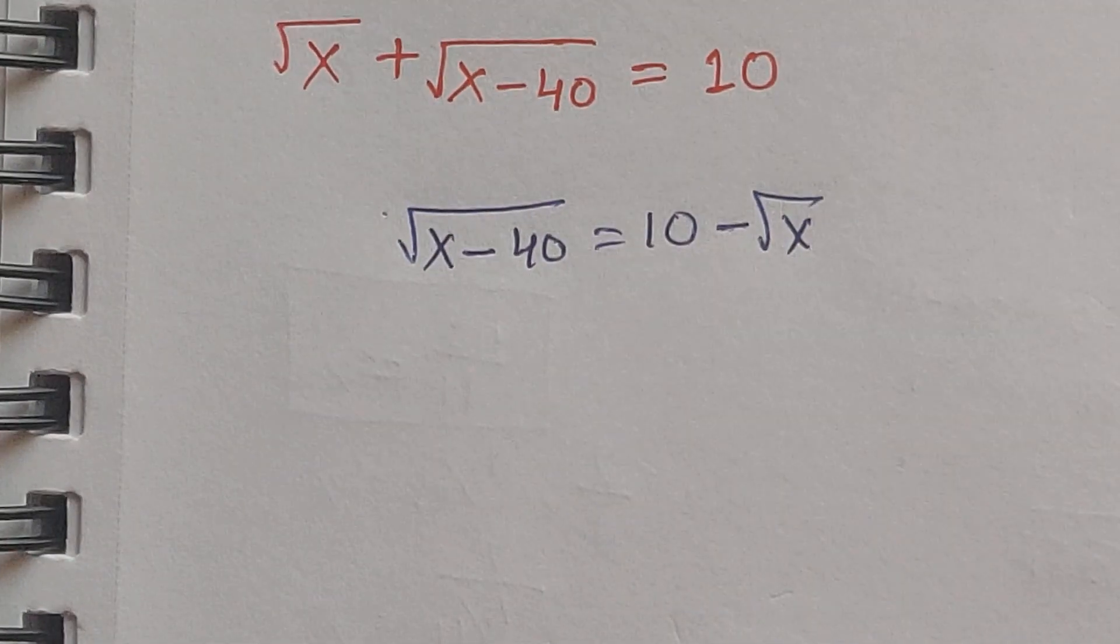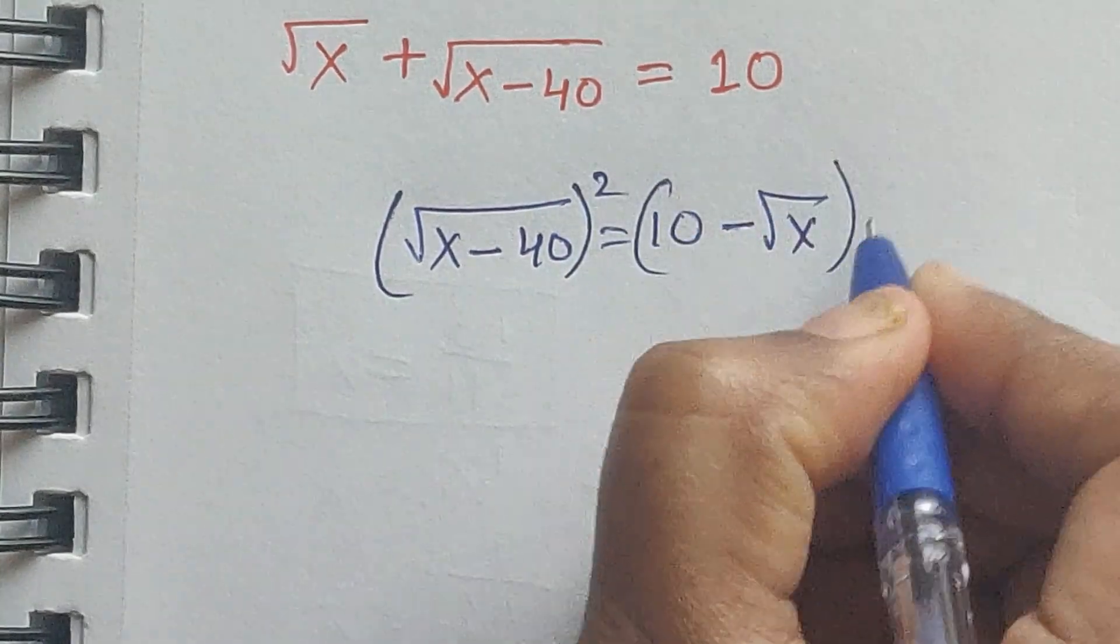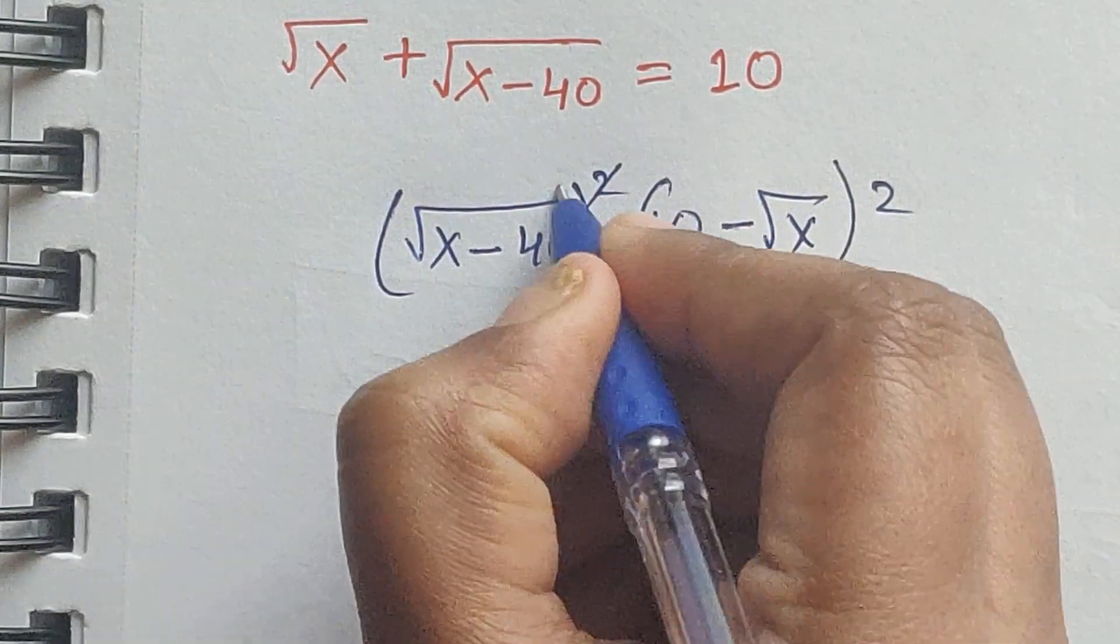Now apply squares on both sides. So square square you can cancel.